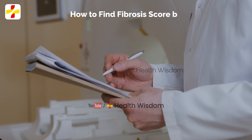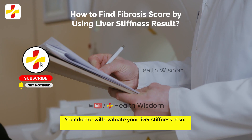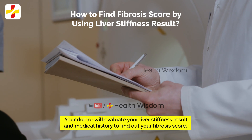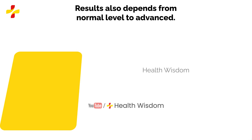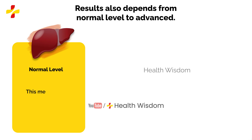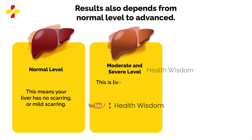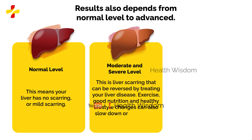How to find fibrosis score by using liver stiffness result: your doctor will evaluate your liver stiffness result and medical history to find out your fibrosis score. Results depend from normal level to advanced. Normal level means your liver has no scarring or mild scarring. Moderate and severe level: this is liver scarring that can be reversed by treating your liver disease. Exercise, good nutrition, and healthy lifestyle changes can also slow down or reverse the buildup of scarring in your liver.